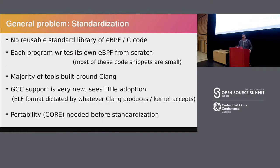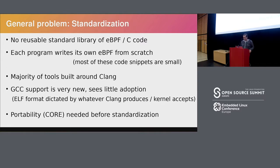Another problem is standardization. GCC also added an eBPF backend very recently — like weeks or a month ago — and it's still very new. The majority of tools and projects like BCC are written for Clang, and there's no standardized ELF format right now. The standard is essentially whatever Clang produces and whatever the kernel accepts, and GCC tries to emulate that. Having more than one compiler is a good idea, but having actually portable code is more important than trying to standardize things.